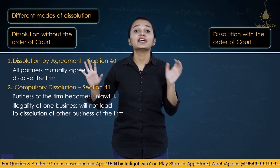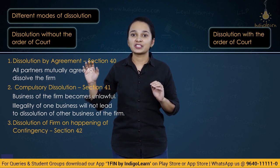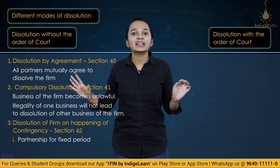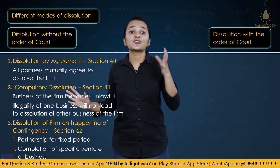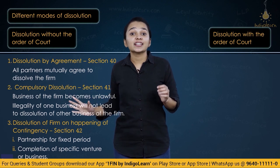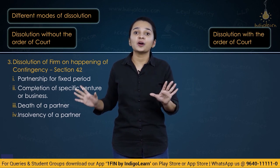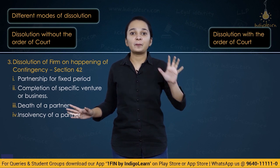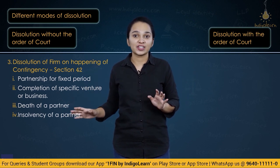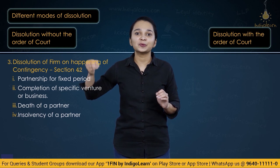Section 42 — dissolution on certain contingencies: expiry of fixed period, completion of a specific business or undertaking, death of a partner, or insolvency of a partner. It is not mandatory to dissolve in any of these four situations — the firm may dissolve if the partners want to. So in case of an event under section 41, the firm cannot continue at all, but in case of contingencies under section 42, the firm can continue carrying on business if it chooses.